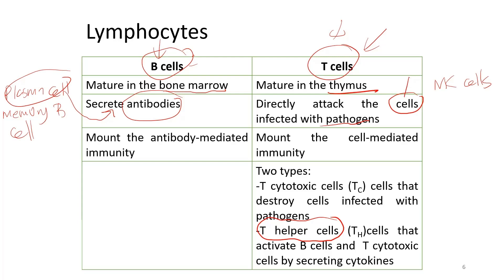B cells are the ones that mount antibody-mediated immunity, and T cells are the ones that mount cell-mediated immunity. There are two types of T cells: T cytotoxic cells, which destroy cells infected with pathogens, and T helper cells, which activate B cells in antibody-mediated immunity and T cytotoxic cells in cell-mediated immunity. T helper cells activate both of these cells by secreting cytokines.